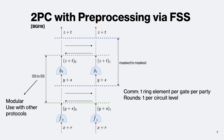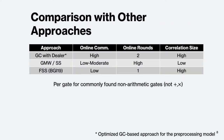How does FSS compare to other approaches? Consider a commonly found non-arithmetic gate. Garbled circuits adapted to the trusted dealer model have high online communication and high correlation size but only two online rounds. GMW and other secret-sharing-based approaches have low-to-moderate online communication depending on the gate, high online rounds, and quite low correlation size. With FSS, you get low online communication and a single online round, but the issue is high correlation size.